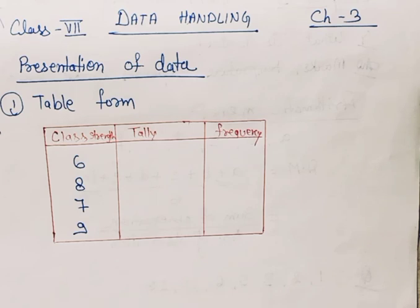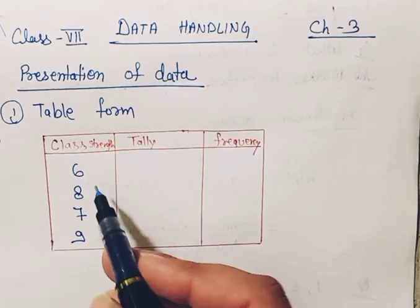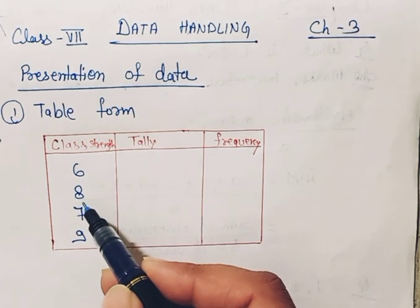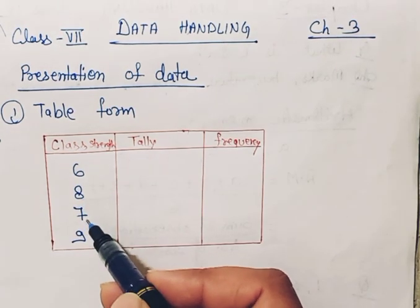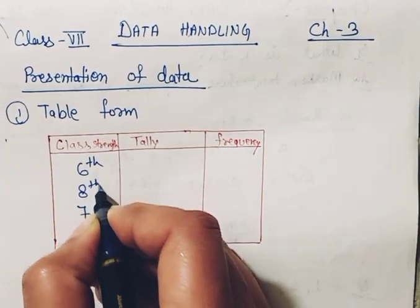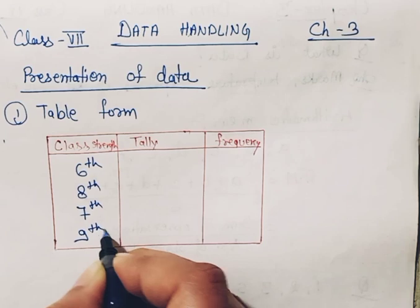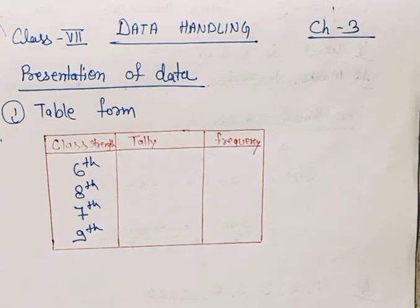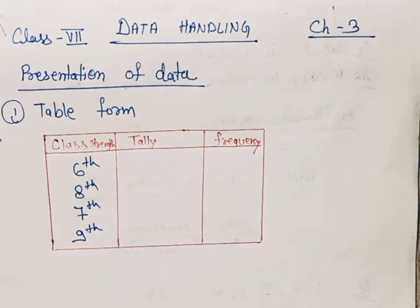Here I have a small table as an example which gives the class strength of 6th, 8th, 7th, and 9th classes. I have not written it in ordered form to show you that it's not compulsory that the strength is given in arranged form, but you have to make the data from that.